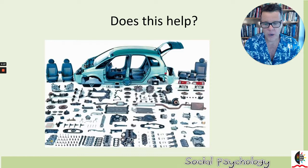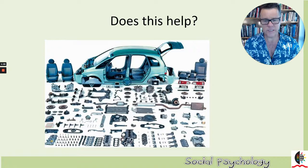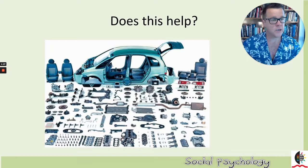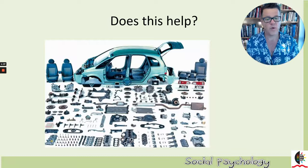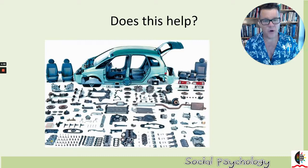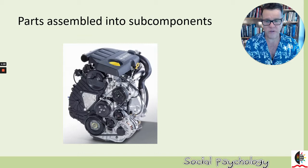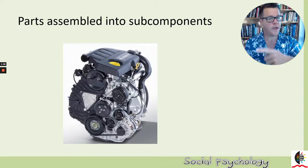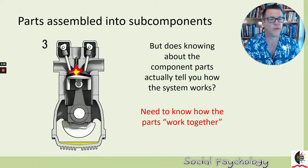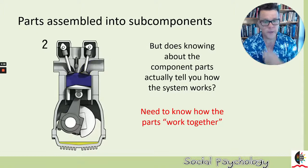Does it help if we took the car apart and looked at its constituent components? Of course, each component is critical for a car to work — you need wheels, a transmission system, valves, pistons — and the design of each object is vital. But taking it to pieces doesn't really explain how the car works. What we need to do is look at how these pieces fit together into functional units, like the engine, where hundreds of units come together and work together to make the car work.